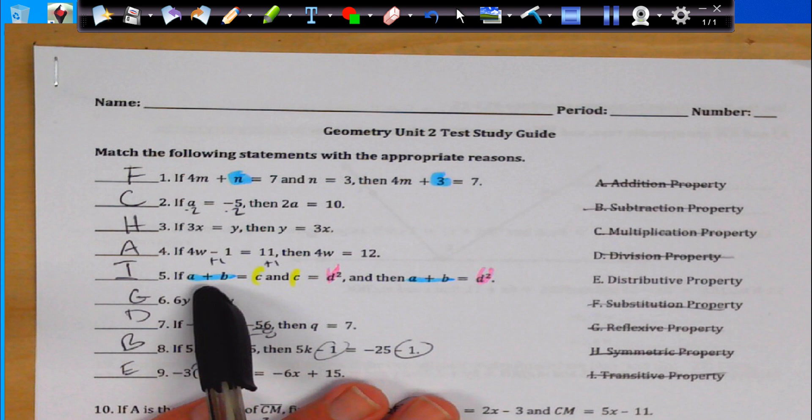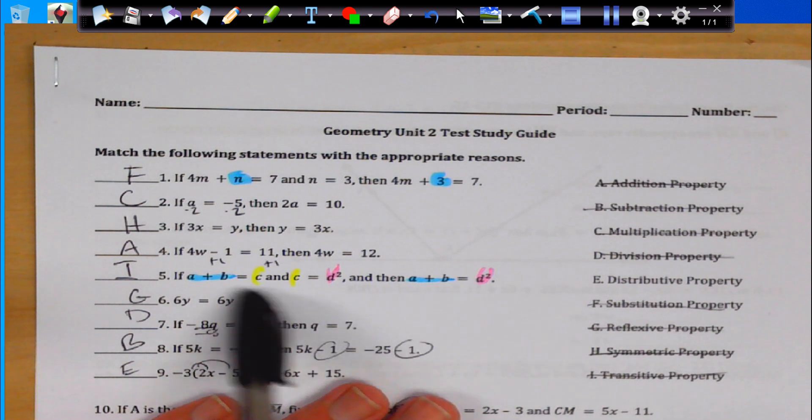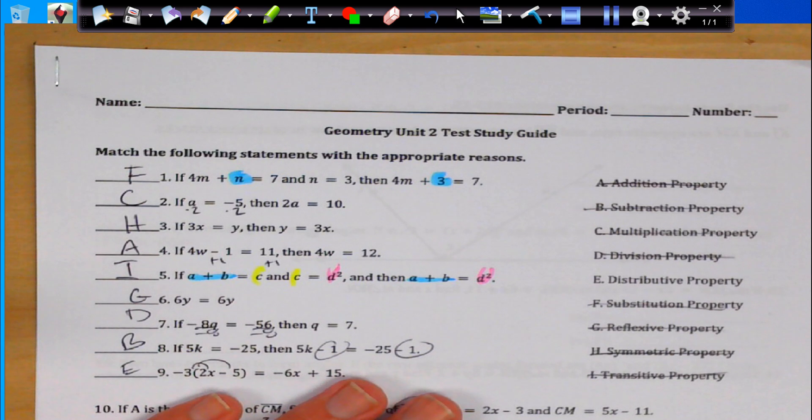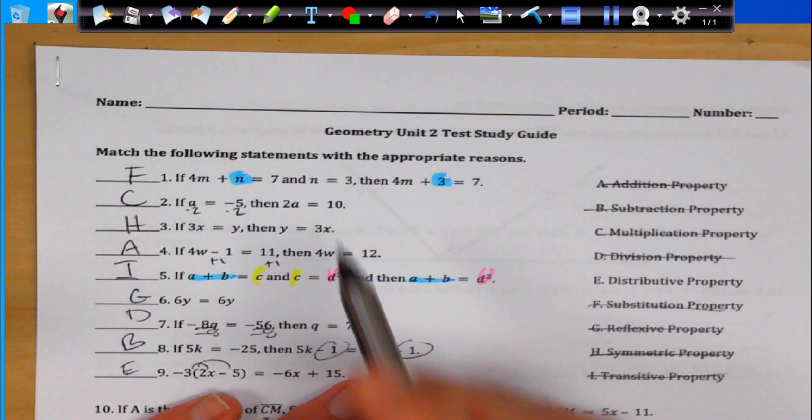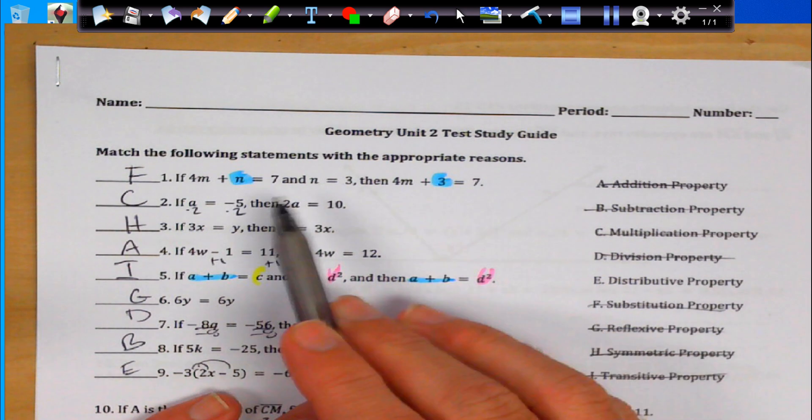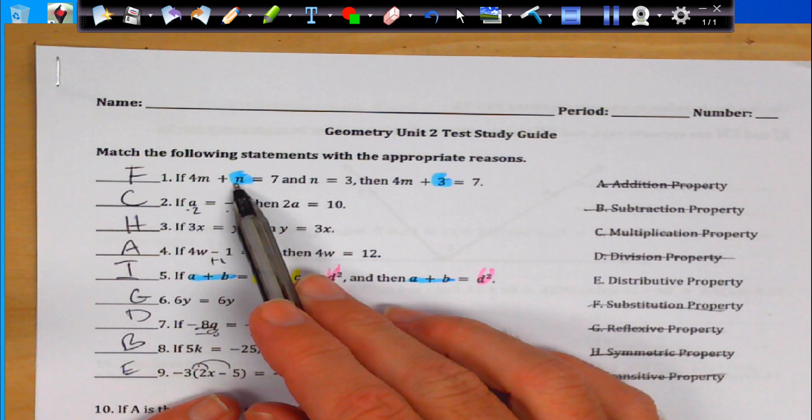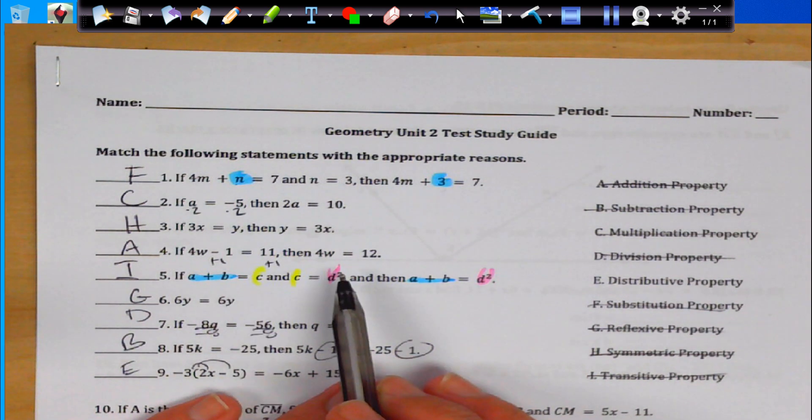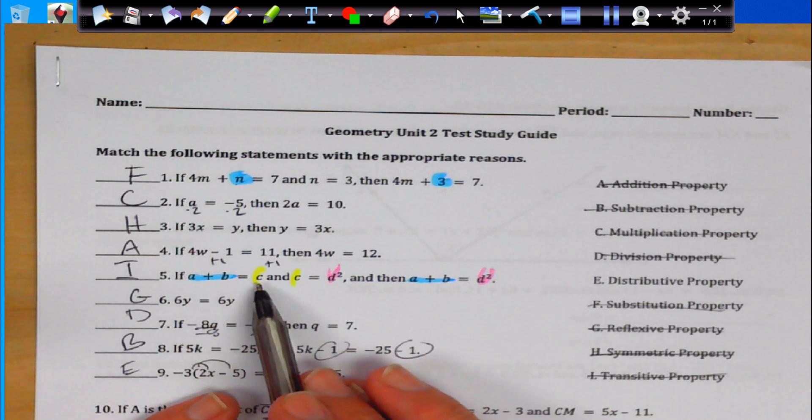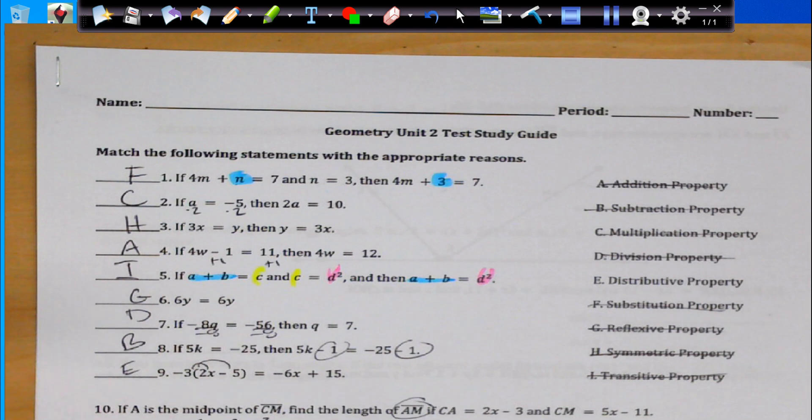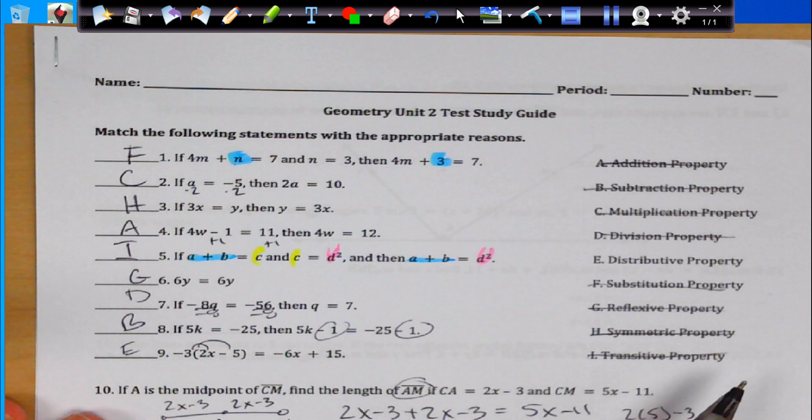Number 5, ab equals c, c equals d squared, ab equals d squared. This is transitive property. Now, I want to make mention that this and this kind of look similar. That's because transitive property is a form of substitution. The difference is, here, I'm saying n equals 3, and I'm just taking a part of the equation out and putting something else in. Think of substitutions like taking the quarterback out, putting a new quarterback in. But the rest of the team stays the same. Here, I'm taking out the whole team and replacing it with a whole new team, like the Chargers are the same as the 49ers, the 49ers are the same as the Chiefs, so thus the Chargers and the Chiefs are the same team.